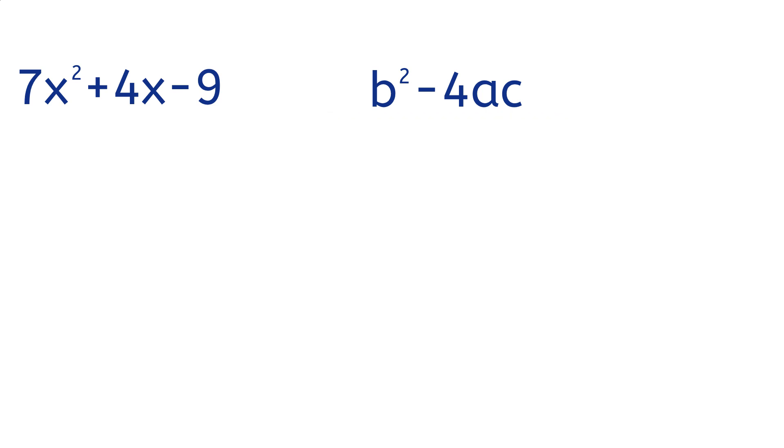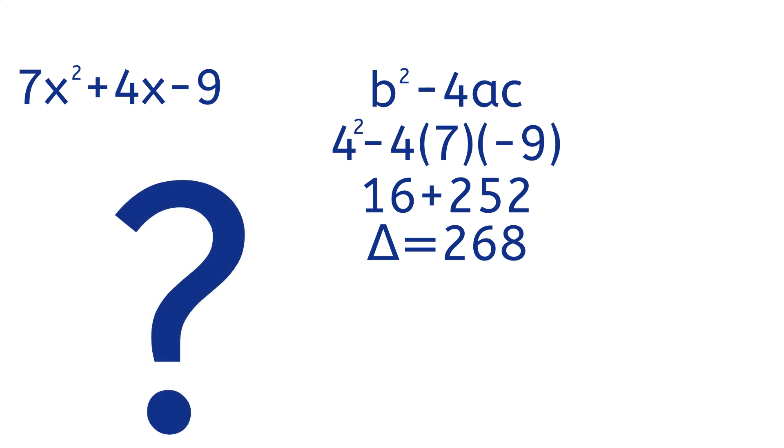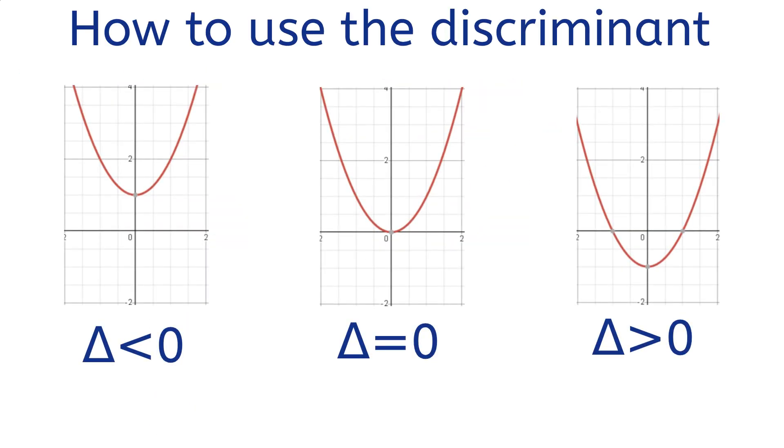This equation specifically tells us how many real roots are in the equation. Doing the math, we calculate that the discriminant equals 268, but what exactly does this tell us? Basically, whenever the discriminant is greater than 0, the equation has two real roots.